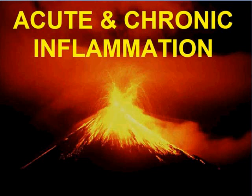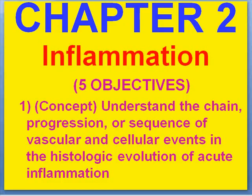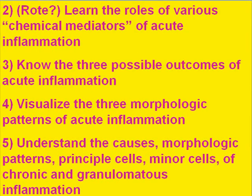It's a long topic, divided up logically. Our objectives for this chapter will be to understand the sequence of vascular, cellular, and chemical mediator events in acute inflammation. We'll discuss the role of various chemical mediators, and the three possible outcomes of acute inflammation: complete resolution, chronic inflammation, or scarring — also called fibrosis. We'll also cover the three morphologic patterns of acute inflammation.